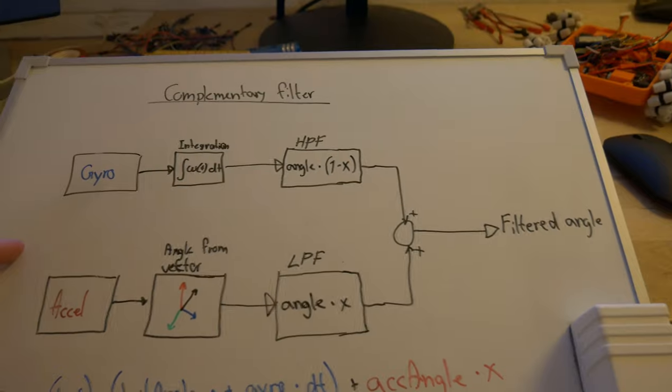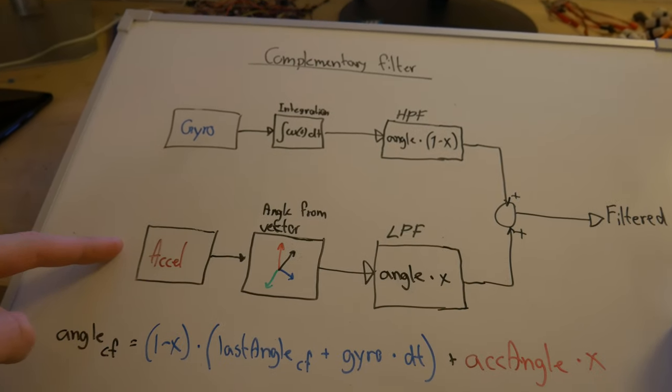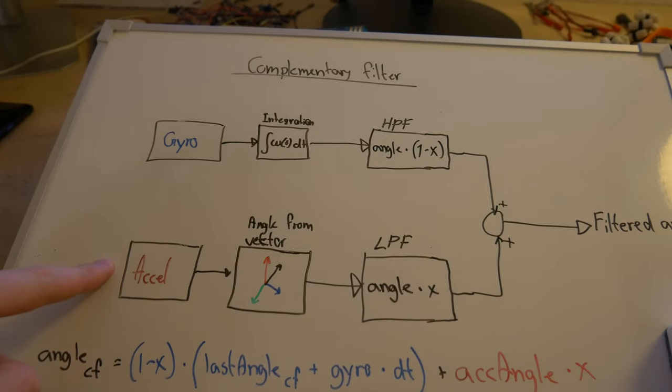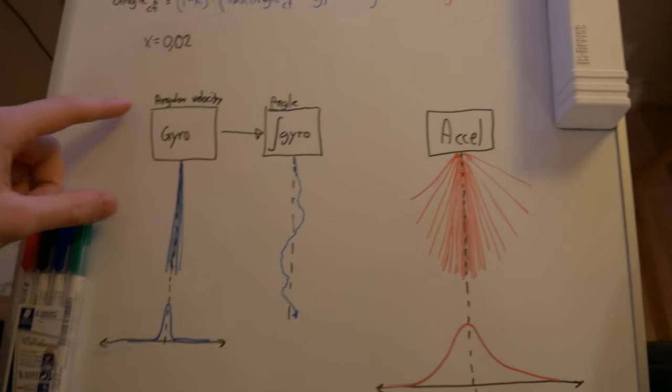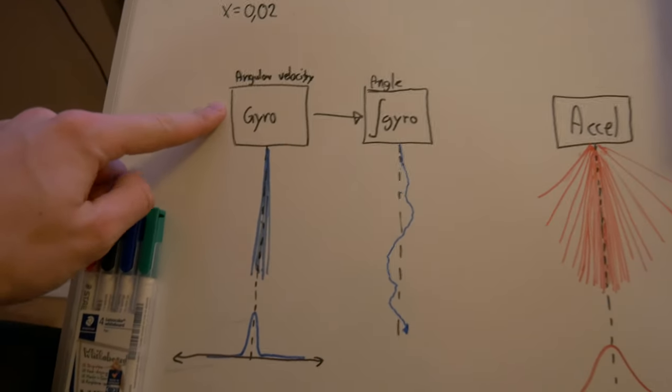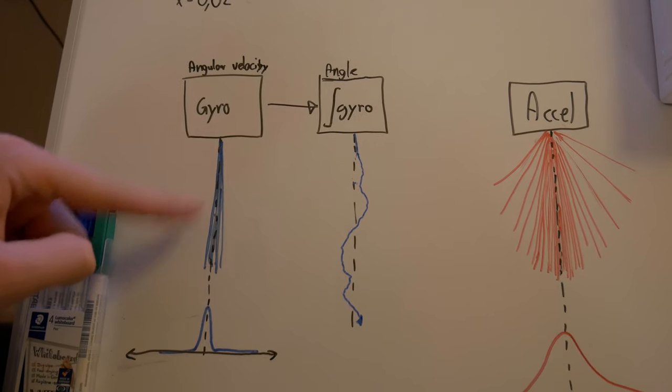Here's an overview of the complementary filter that I'm going to be using. Here we have the accelerometer raw data and gyroscope raw data. You have the angular velocity, which is the raw data from the gyro, and that is pretty precise.